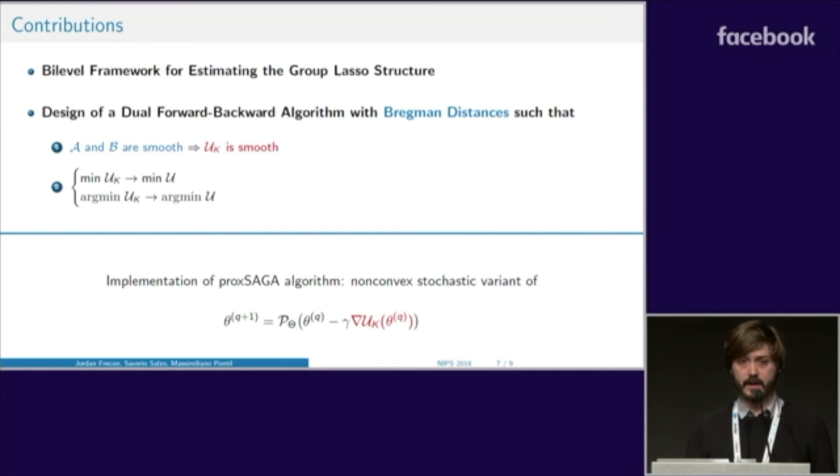Now that U K is a smooth function of theta, we can minimize it using, for example, the ProxSaga algorithm, which is a variant of projected gradient descent.